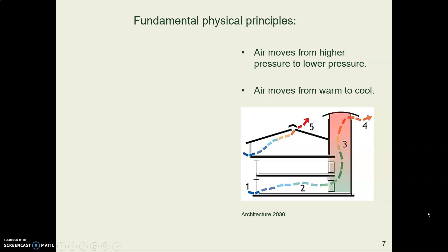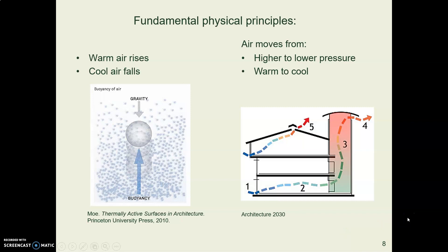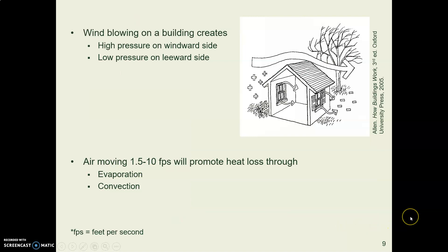Two other principles: air moves from high pressure to low pressure — that's why the wind blows — and it moves from hot to cold, or warm to cool. So these are our basic principles for cooling buildings: warm air rises and cool air falls, air moves from high pressure to low pressure, and from hot to cold.